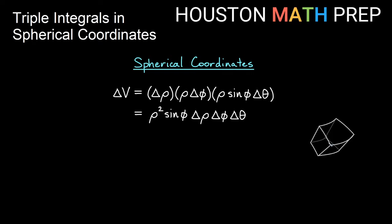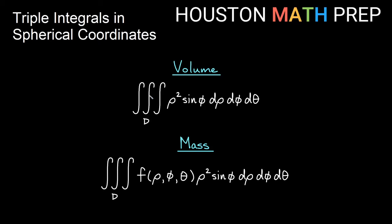As this box gets very small and we cram more of them into our 3D region, the unit of volume becomes microscopic. So our differential volume element in spherical coordinates is dV = rho² sine phi d rho d phi d theta. If calculating volume, integrate this directly; if calculating mass, also include a density function inside the integral.